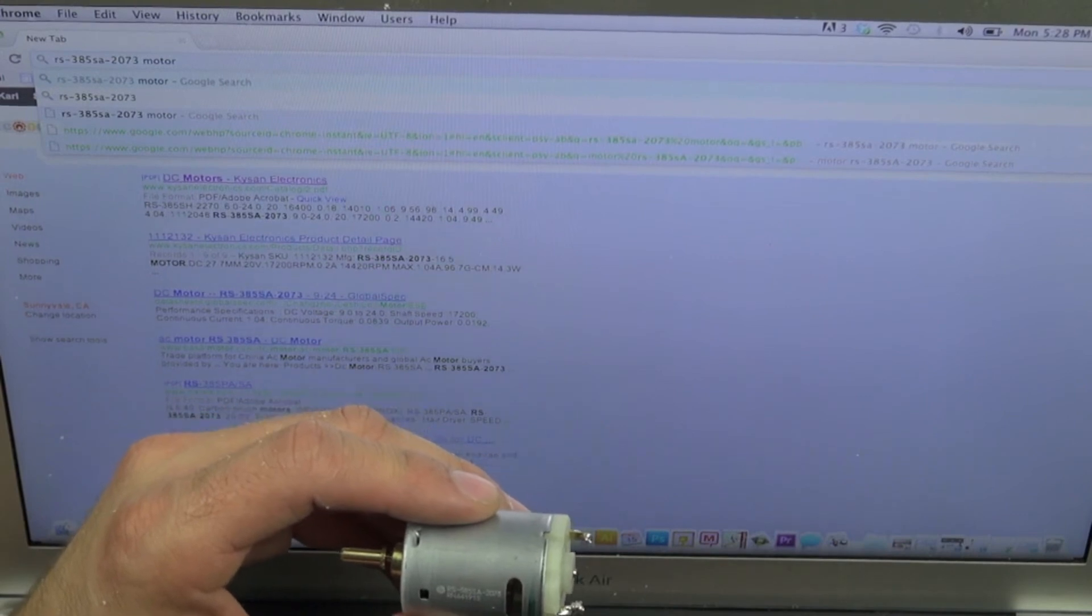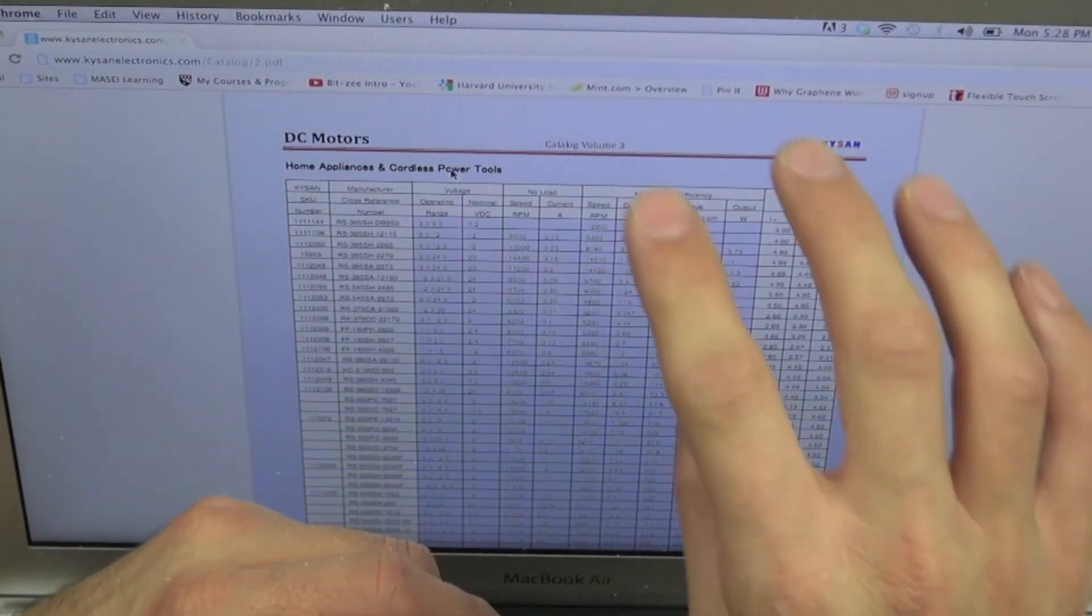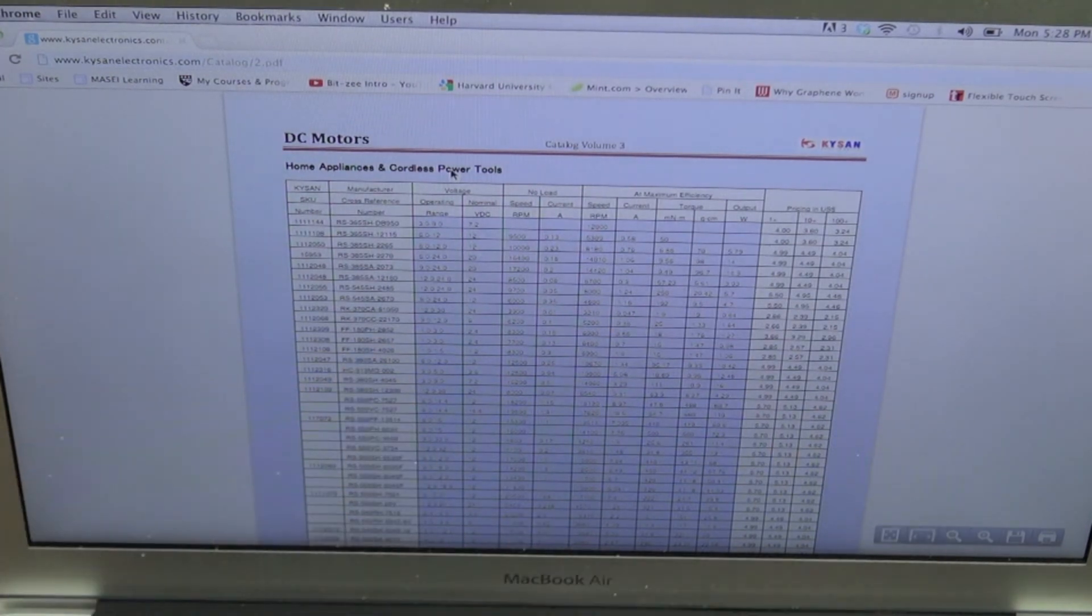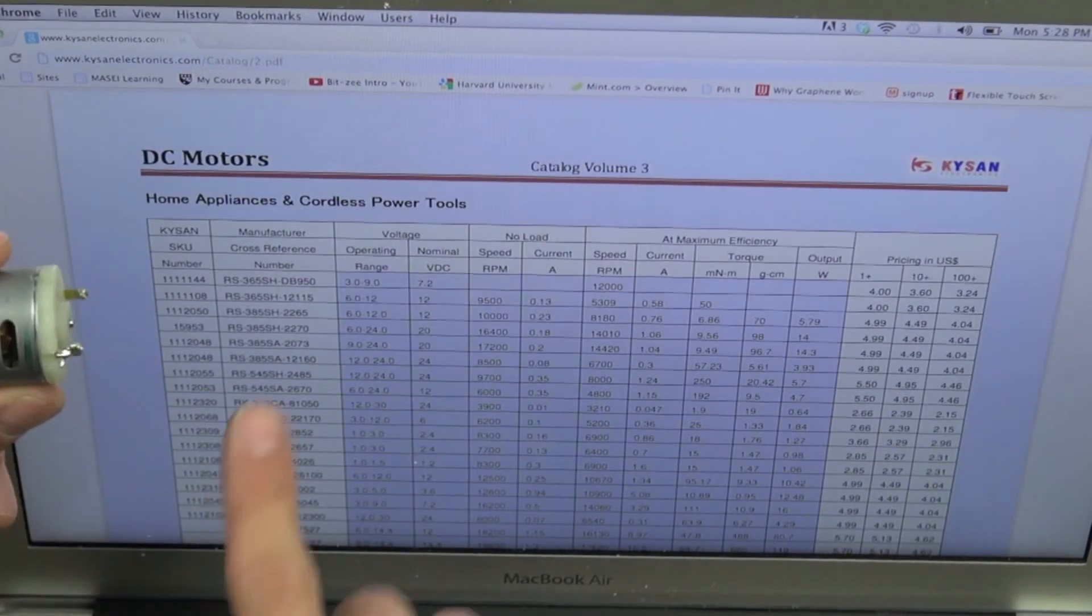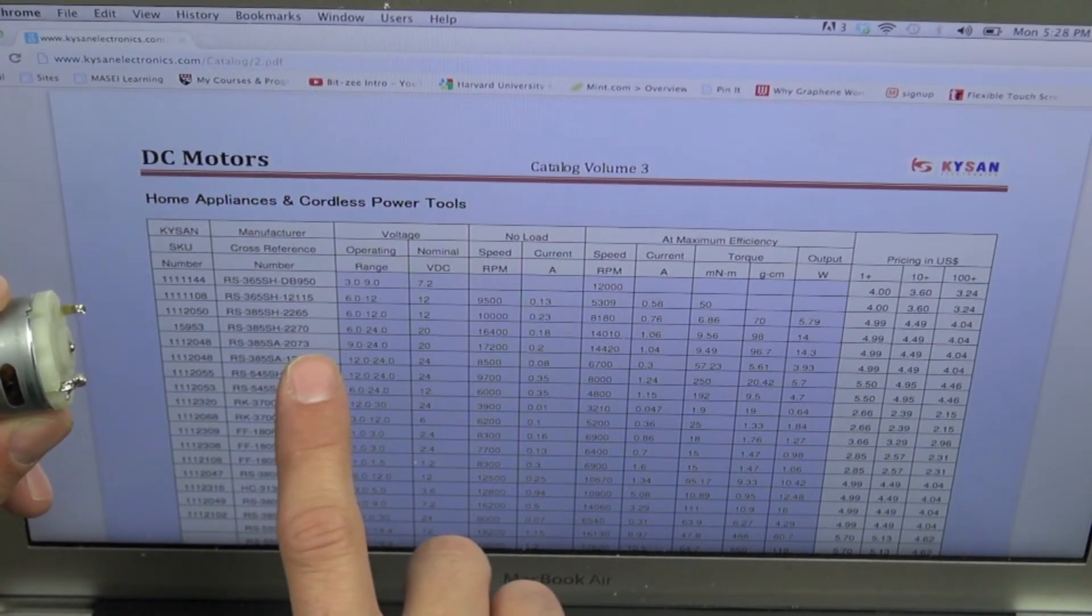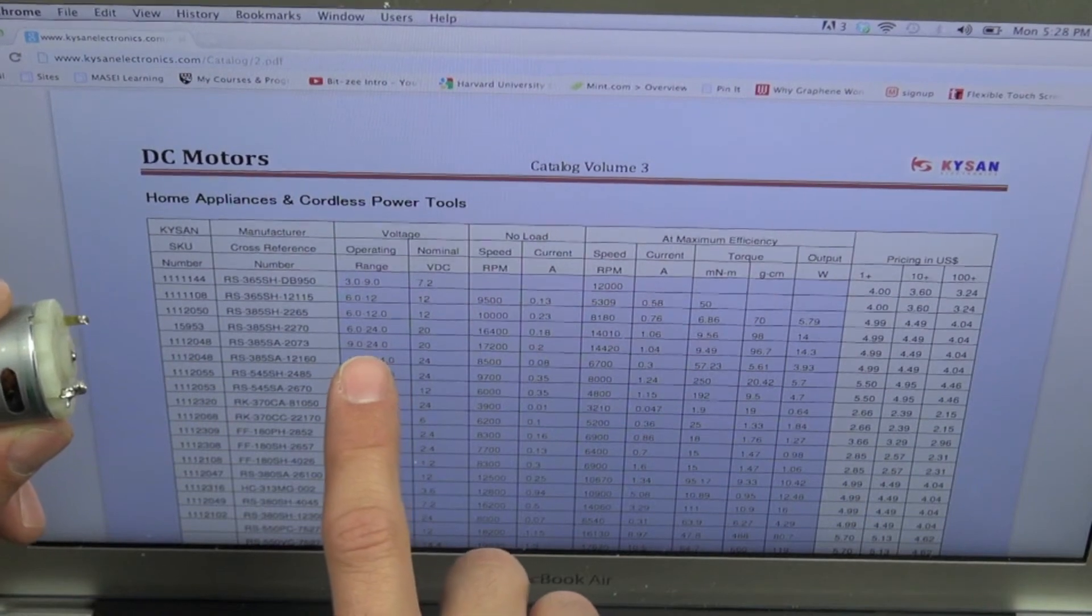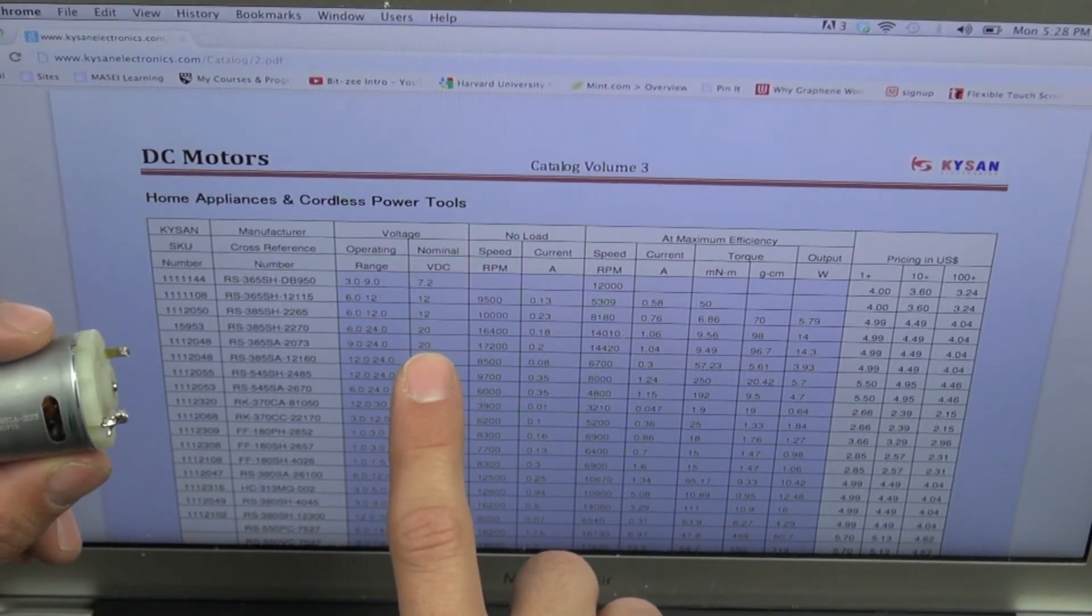So it's always good to type in the actual name of what you're looking for when you type in your part list there. So we've got a Kaisan specification sheet. This is actually a Mubuchi motor, and we'll go through and we'll see if we can find it. It's right there, the 2073 model. So our operating voltage is between 9 and 24 volts. Nominal voltage is around 20.